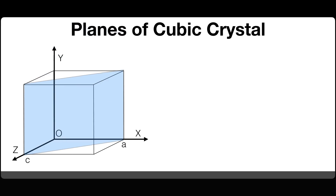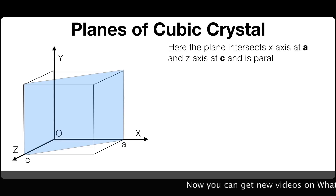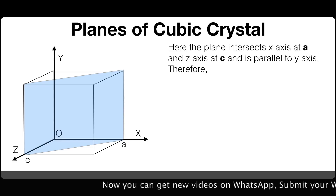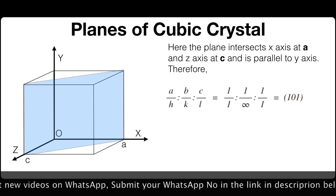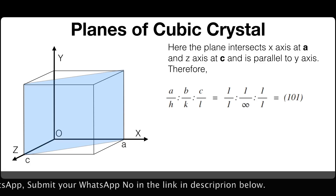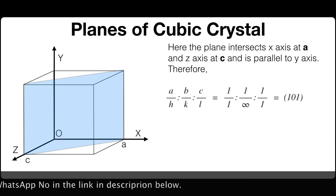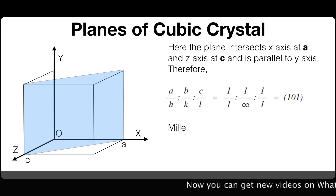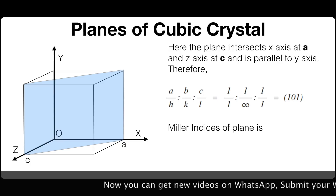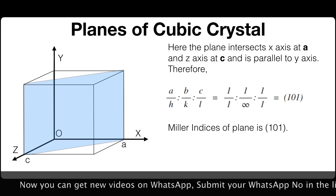Here the plane intersects the x-axis at A and the z-axis at C, and is parallel to the y-axis. Therefore the ratio values become A/H : B/K : C/L = 1/1 : 1/∞ : 1/1, which equals 1, 0, 1. Therefore the Miller indices of this plane is (1 0 1).